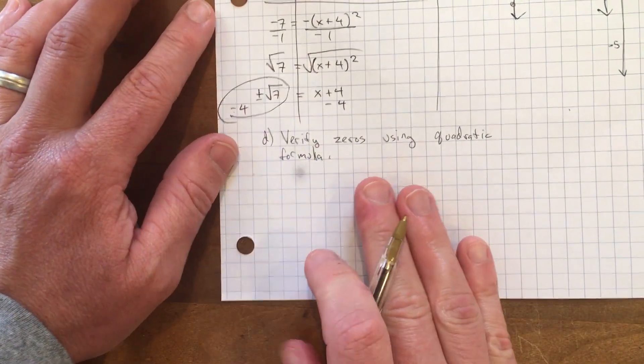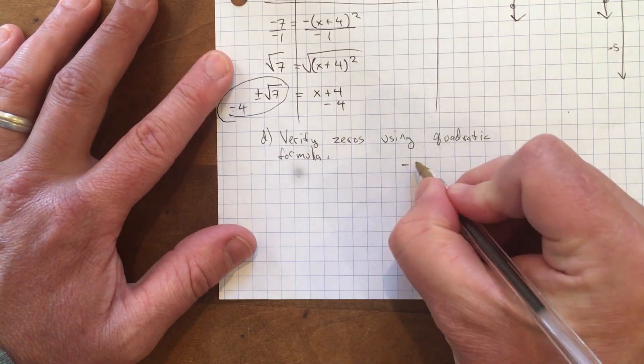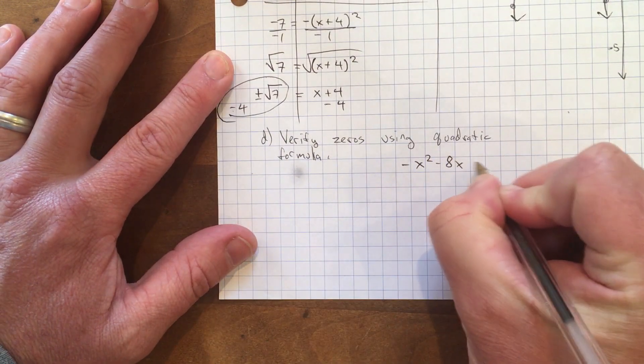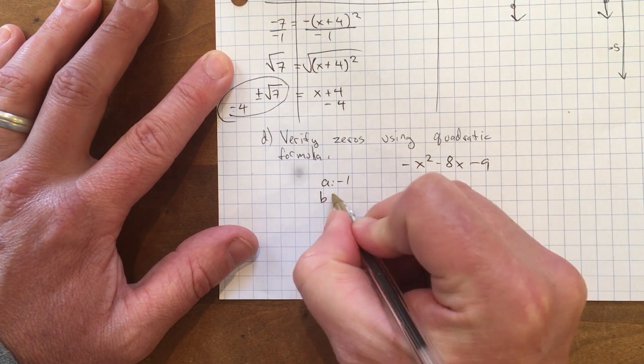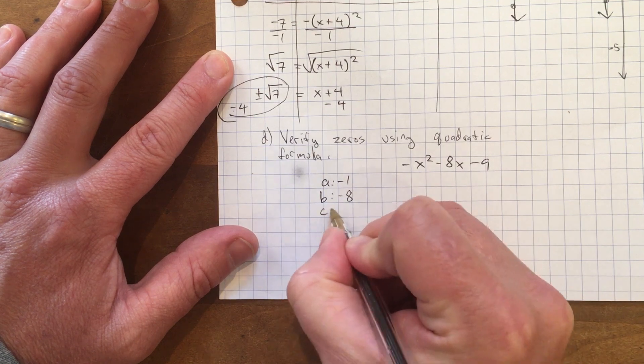Now let's go back to the very first function we started with, -x² - 8x - 9, and use the quadratic formula. So a = -1, b = -8, and c = -9.